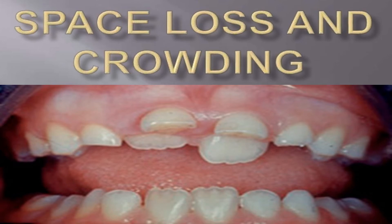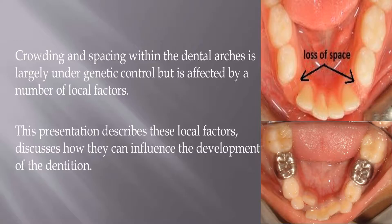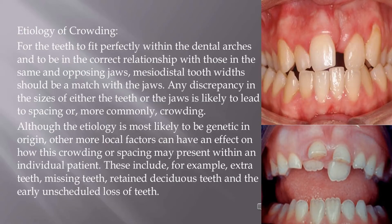Crowding and spacing within the dental arches is largely under genetic control but is affected by a number of local factors. This presentation describes these local factors and discusses how they can influence the development of the dentition. For the teeth to fit perfectly within the dental arches and to be in the correct relationship with those in the same and opposing jaws, mesiodistal tooth widths should be a match with the jaws.